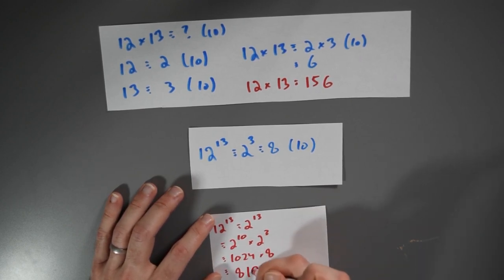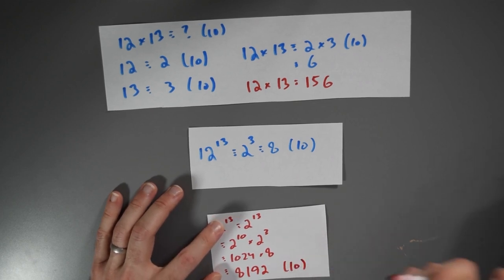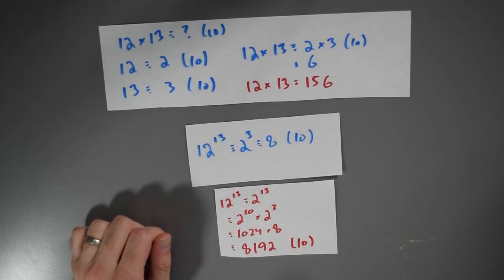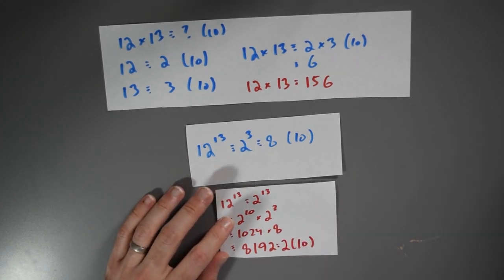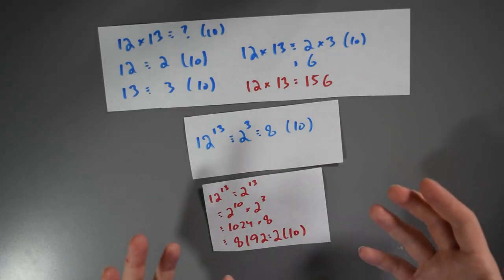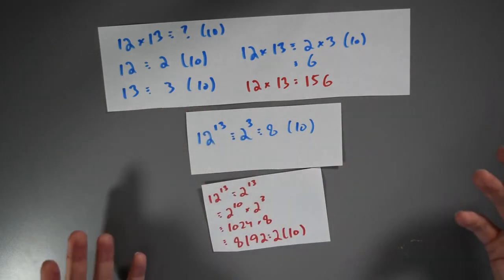This is 8,192 modulo 10. So 12 to the 13th is 8,192 modulo 10. That is the same thing as 2 modulo 10. So something went wrong.